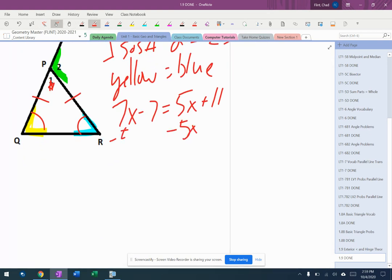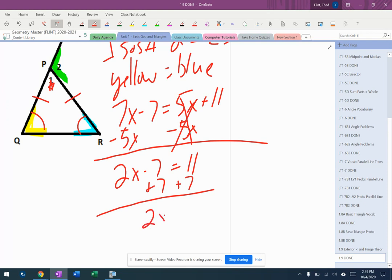Minus 5x minus 5x. 2x minus 7 equals 11, plus 7 plus 7. 2x equals 18. x is 9.